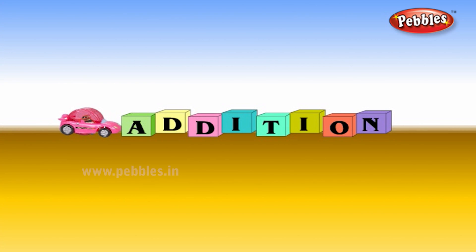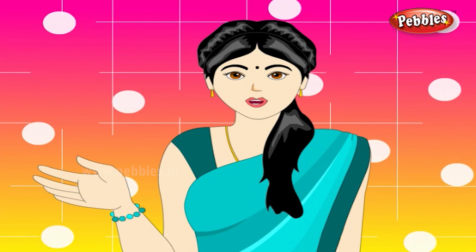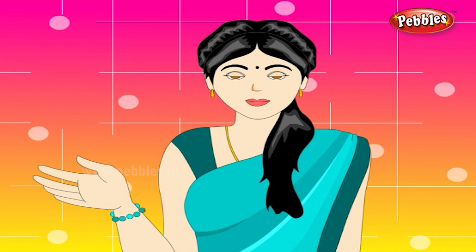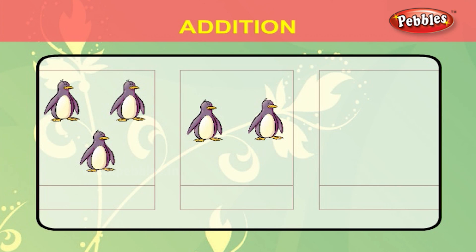Addition. Let us first learn simple addition. The first box contains 1, 2, 3 penguins and the second box contains 1, 2 penguins. Now add the penguins in the first box and the second box. We write this as 3 plus 2 is equal to 5.